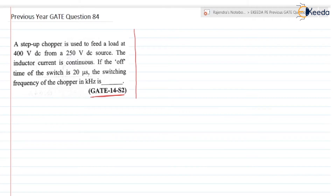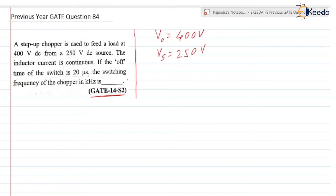A step-up chopper is used to feed a load at 400 volt DC, so the output voltage V0 is equal to 400 volt. It is fed from a 250 volt DC source, so Vs is equal to 250 volt. It is a step-up chopper and the inductor current is continuous, so IL is continuous.